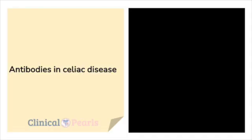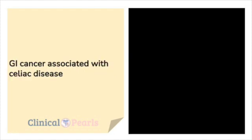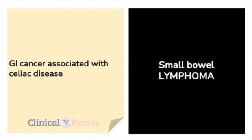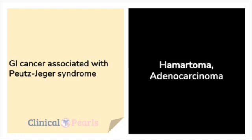Antibodies in celiac disease: IgA endomysial antibodies, IgA tissue transglutaminase, and anti-gliadin. GI cancer associated with celiac disease: small bowel lymphoma. GI cancer associated with Peutz-Jeghers syndrome: hamartoma and adenocarcinoma.